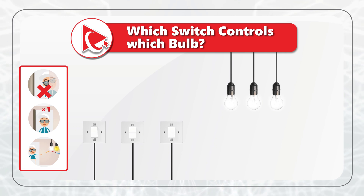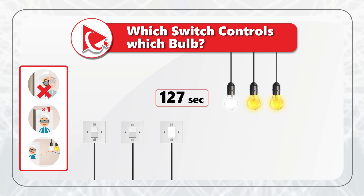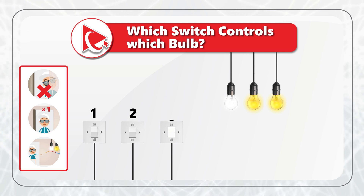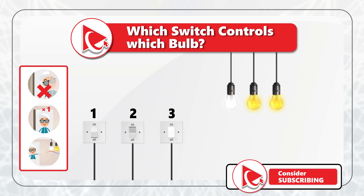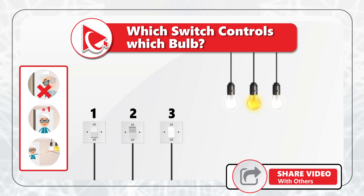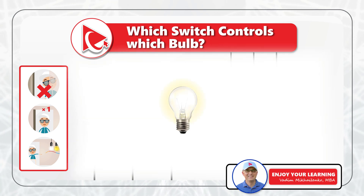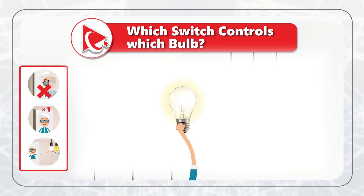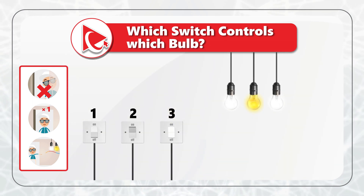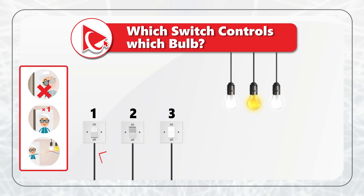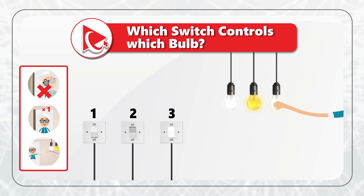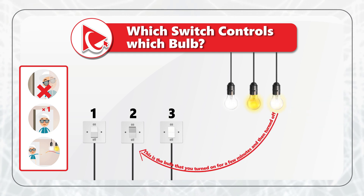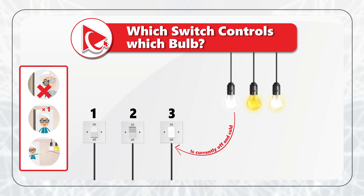To solve this challenge, you need to turn on any two switches and keep them on for a period of time. For example, you can use switches one and two to turn them on. After a few minutes, turn off one of the switches you initially turned on — for example, switch two. The idea is that you let the bulb warm up, so you can determine which bulb was on for a period of time by touching it when you enter the room. When you enter the room, you will see that one bulb is on and two bulbs are off, but you can touch both bulbs that are off to determine which one is warm.